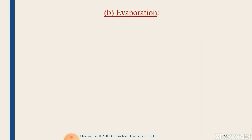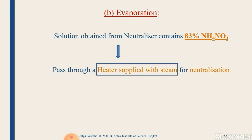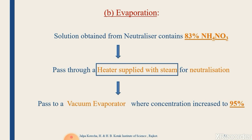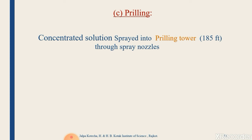Because the neutralization reaction is exothermic, heat is released and the temperature is higher, so no external heating is required for the neutralizer tower. The solution of ammonium nitrate obtained from the neutralizer contains around 83% ammonium nitrate. To increase this concentration, it is passed through a heater supplied with steam and then into a vacuum evaporator, increasing the concentration to around 95% ammonium nitrate through the evaporation process.